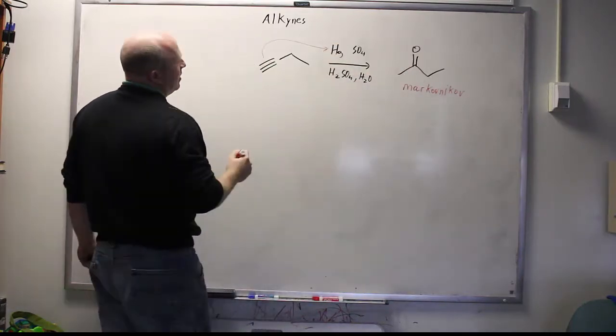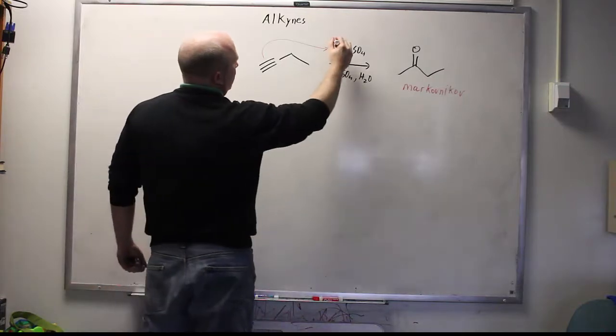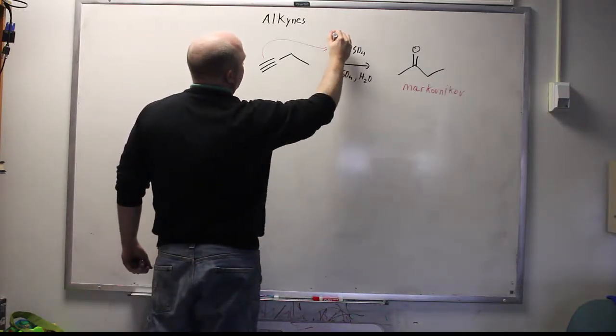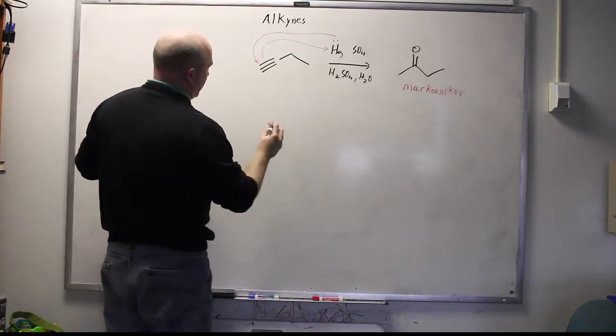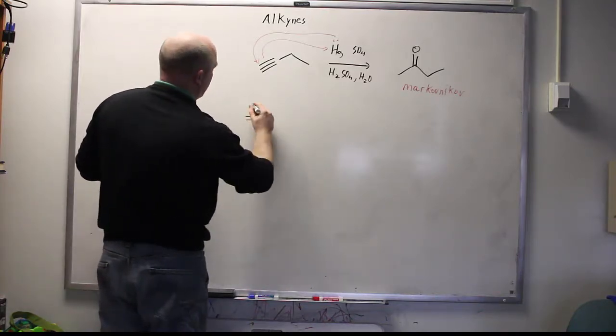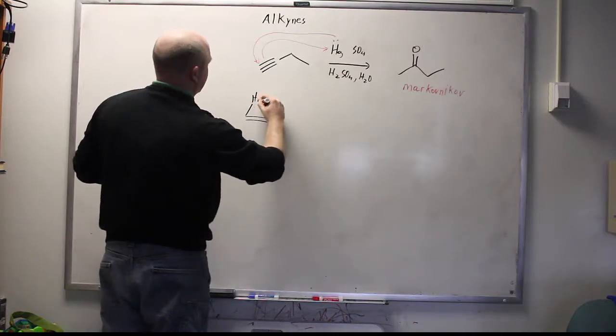It starts as you'd expect with the triple bond attacking the mercury. The mercury of course has a pair of electrons on it which allows it to make a weird intermediate and this intermediate will be cationic in nature. So we could imagine drawing that as follows.